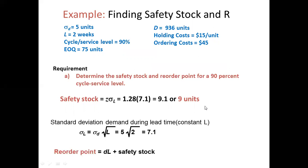The reorder point is demand during lead time plus safety stock. The demand during lead time is 2 weeks at 18 units per week, giving 36 units. Adding safety stock of 9 units, the reorder point is 45 units.